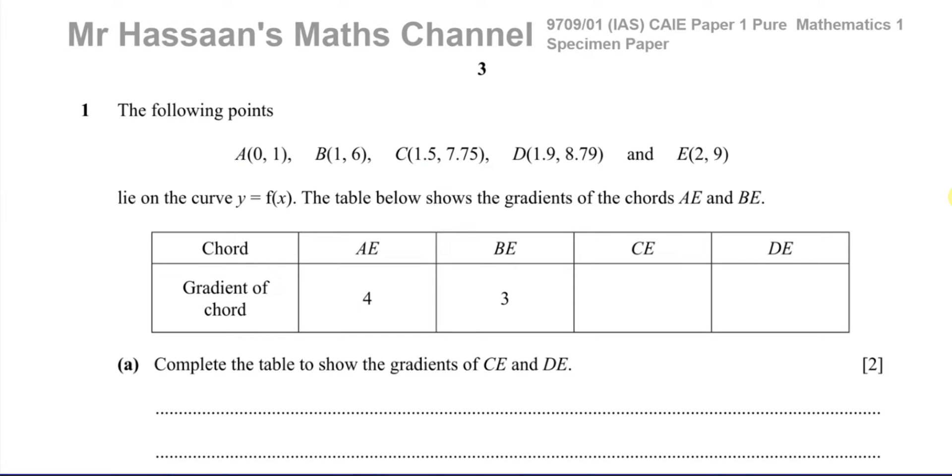I'm going to start with question number one in this paper. Question number one is basically about finding the gradient between points. It says the following points A, B, C, D and E, which are given here, lie on the curve Y equals f(x). The table below shows the gradients of the chords AE and BE. So AE, its gradient of that chord is 4 and BE, the gradient of the chord is 3.